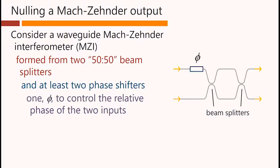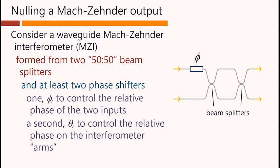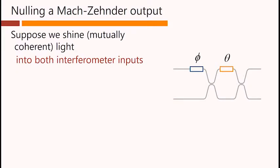One, phi, to control the relative phase of the two inputs, and a second, theta, to control the relative phase on the interferometer arms.